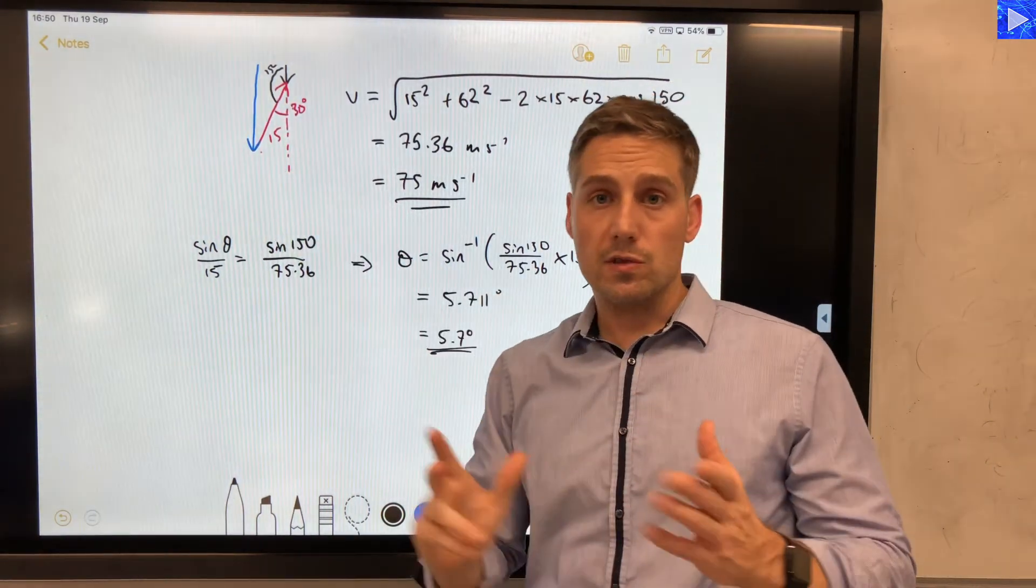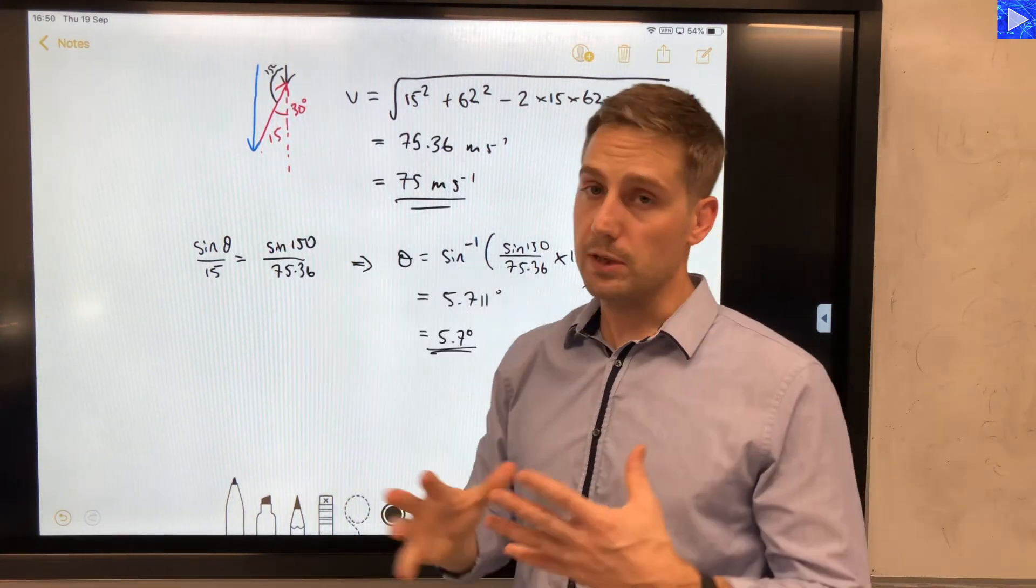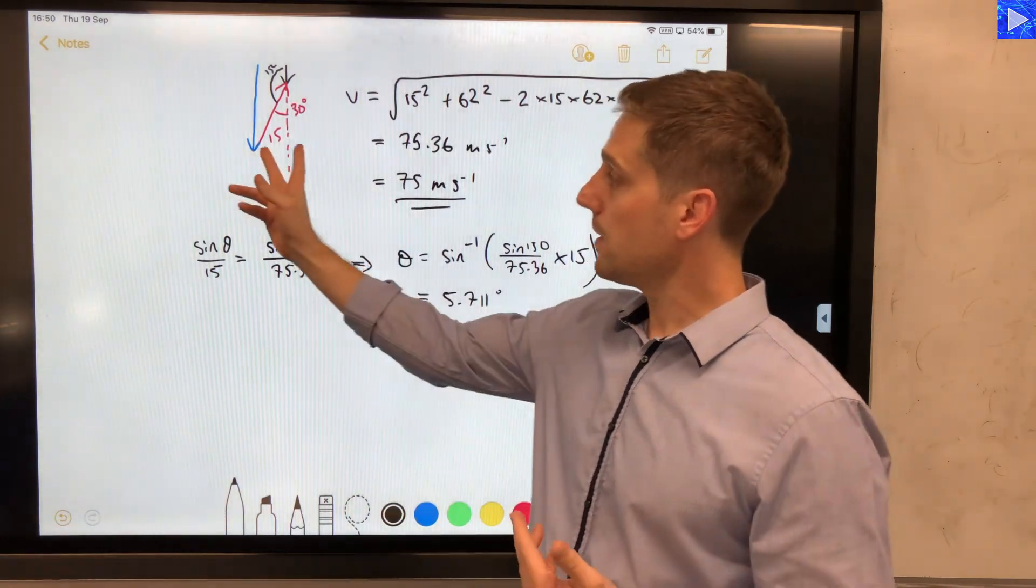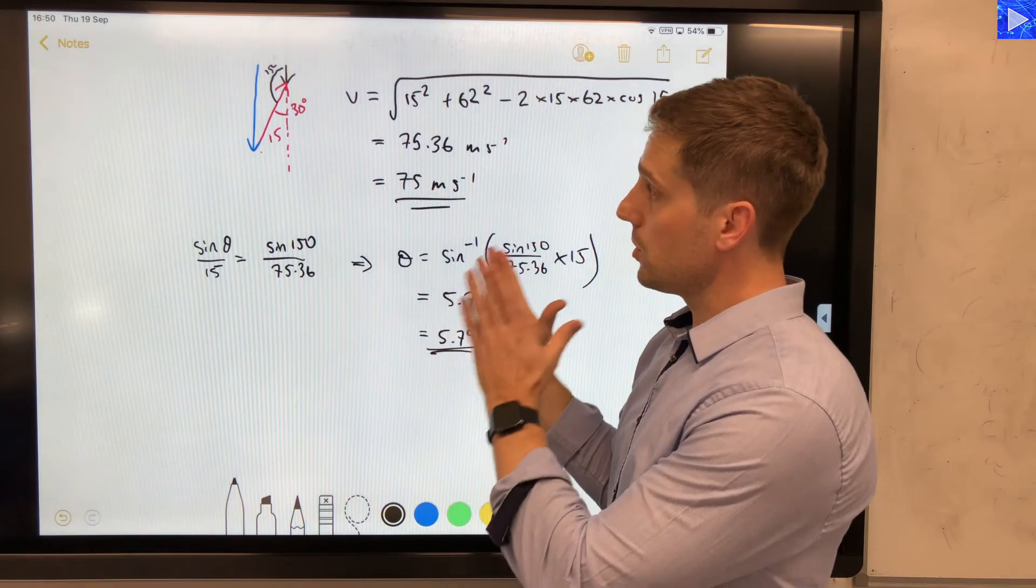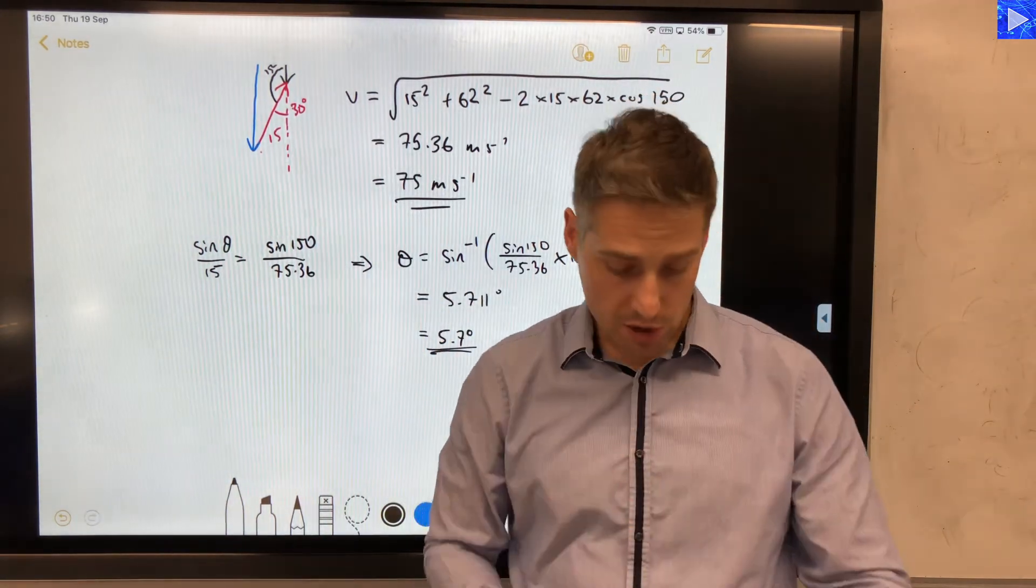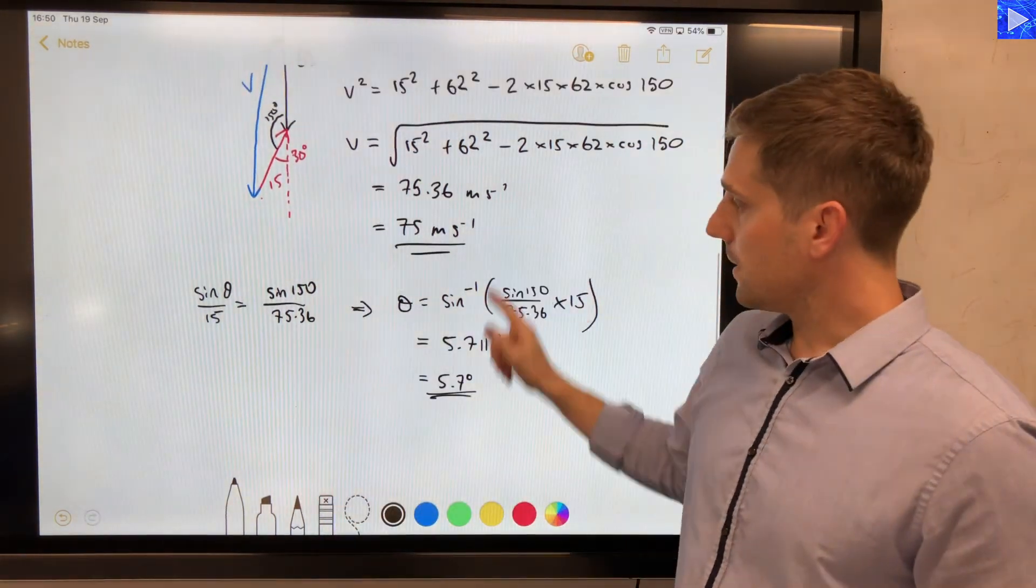So to 2 significant figures, that's 5.7 degrees. And there you have it, that's the angle. If you were to split this up into horizontal and vertical components, like I said, the crosswind and headwind combination to work out the actual crosswind and the actual headwind, if you work that out using the right angle triangle method, you should get exactly the same answers.